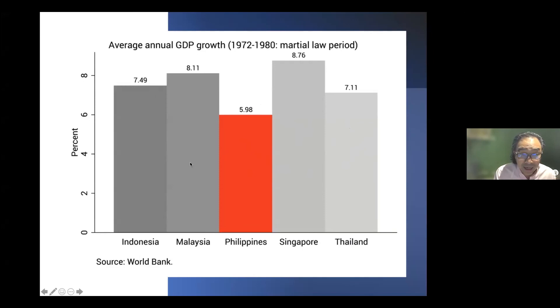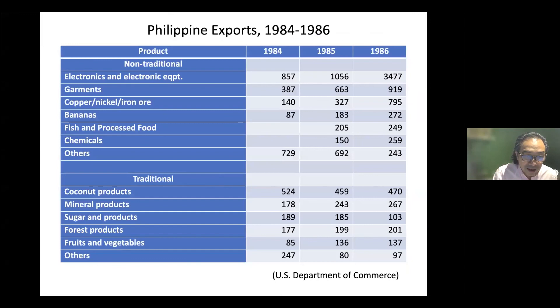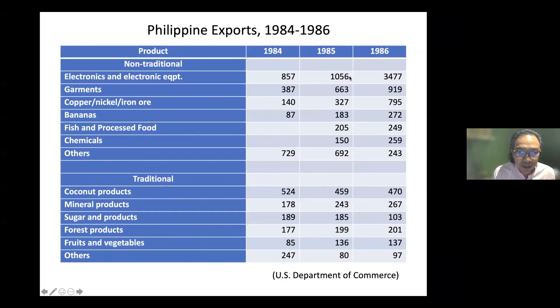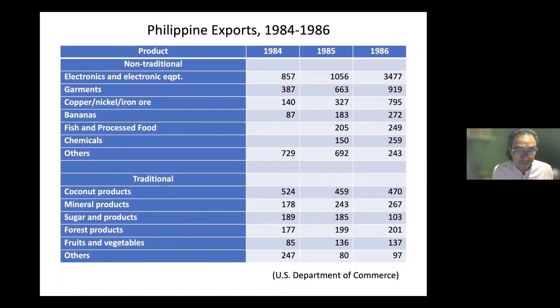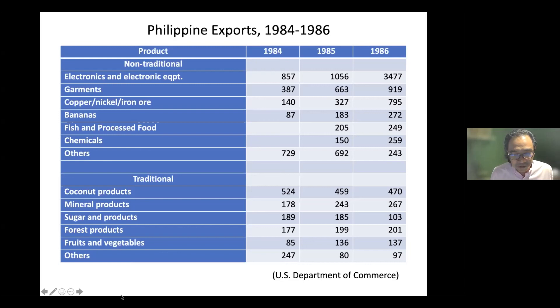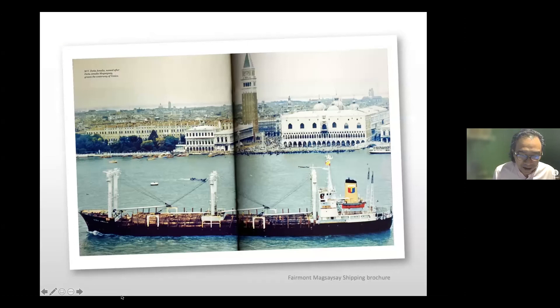Throughout this period, Malaysia and Thailand were already ahead of the Philippines. Also notable is the transformation in Philippine exports — traditional exports from the Spanish colonial period were already declining as the Philippines was developing into a manufacturer of electronics, electronic equipment, and garments. Our chief export today is still electronic products. Unfortunately, one export promoted during the Marcos era was forest products — the most massive deforestation of primary-growth forest in the Philippines took place during his regime. Logging also created an induced demand for shipping.